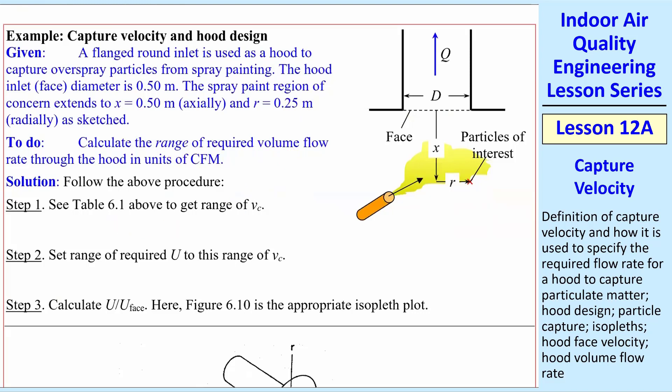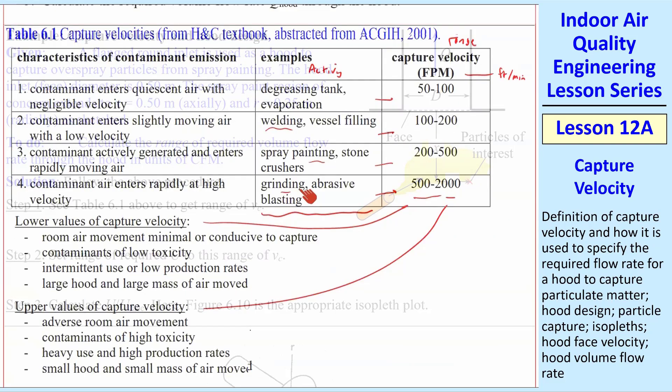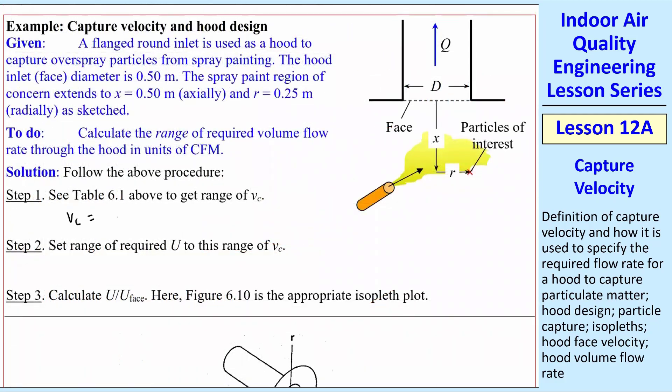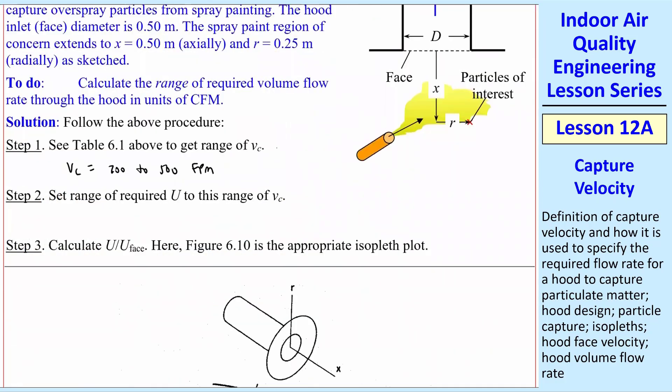And so the first thing I do is step one, and that is to look at Table 6.1 to get the range of VC. This is spray painting. So our VC is 200 to 500 feet per minute. So that's all there is to it. Step two is set the range of required U to this range of VC. Just set U equal VC.